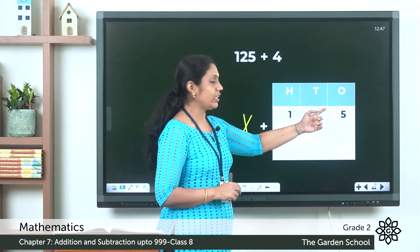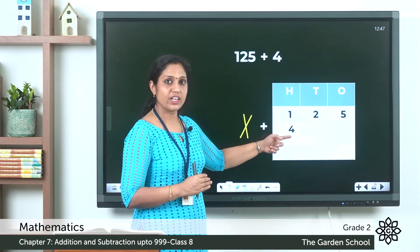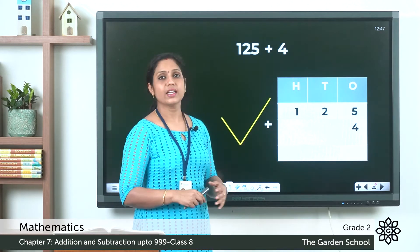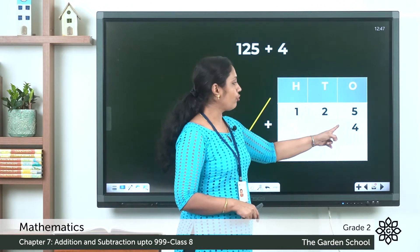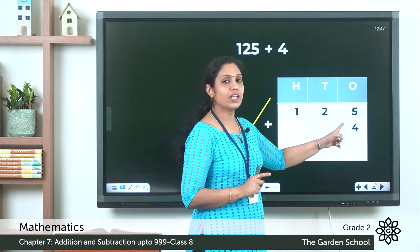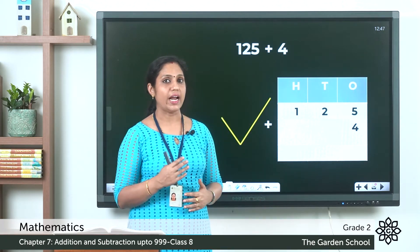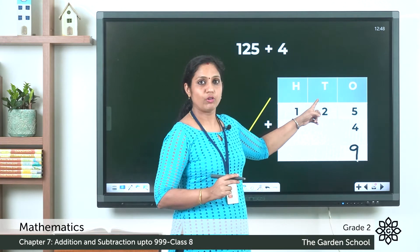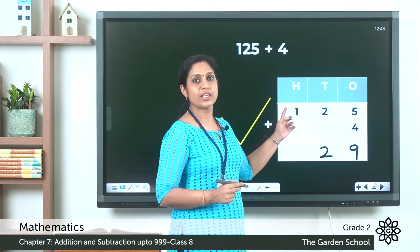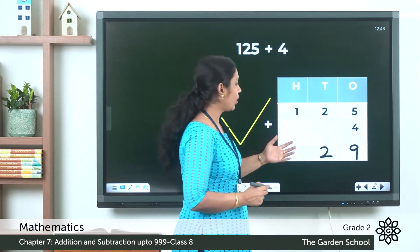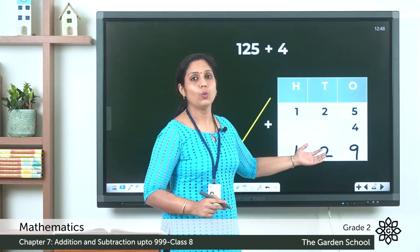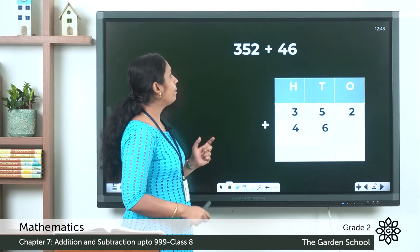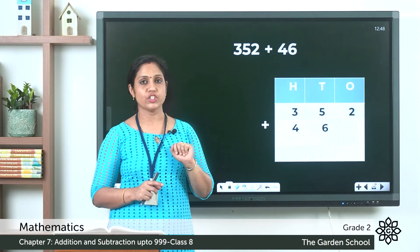That 4 should be placed in the ones place. If we place 4 in the hundreds place, we won't get the correct answer. The correct placement is 125 plus 4, where 4 is placed in the ones position. So 5 plus 4 is 9; in the tens place we have only 2, which we write in the answer; and in the hundreds place we have 1, which we also write. We get the answer 129.